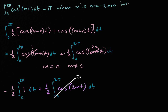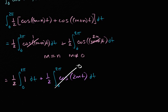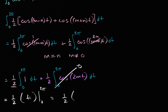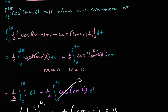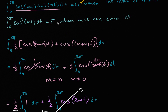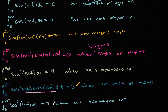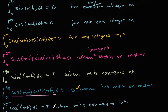So the whole second term is going to be zero. The first term is going to be one-half times the antiderivative of one — that's just t — evaluated from zero to two pi. That's equal to one-half times two pi minus zero, which is one-half times two pi, which is equal to pi. We have now established this result as well, and we now have a full toolkit for evaluating the Fourier coefficients, which we will do in the next video.